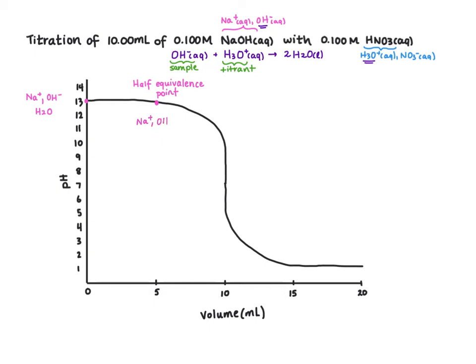We'll still have some hydroxide but less. We'll have water. And we'll now have nitrate from our titrant. We will not have any H3O because before our equivalence point the limiting reagent is hydronium, and it's going to react the second it's added. The excess reagent is hydroxide. So this is our titrant, and this is our sample.